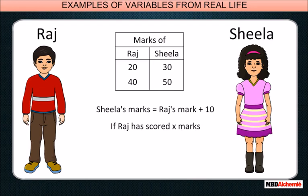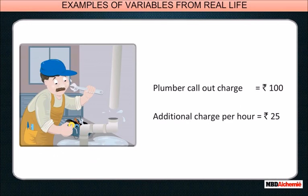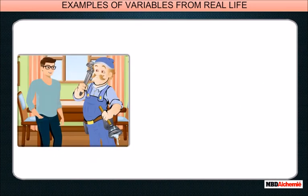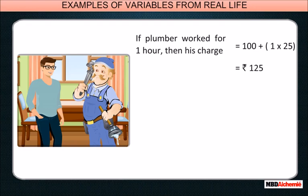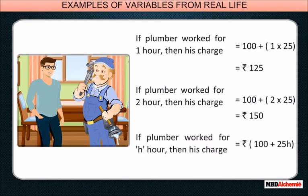As another example, a plumber's call out charges are 100 rupees and he then charges an additional amount of 25 rupees per hour. Mr. Harris calls plumber services for his bathroom. If the plumber works for one hour, then his charge is 100 plus one times 25, that is 125 rupees. For two hours, the charges are 100 plus two times 25, that is 150 rupees. If the plumber works for h hours, then the charges are 100 rupees plus 25h. Here, h can be one, two, three, etc.